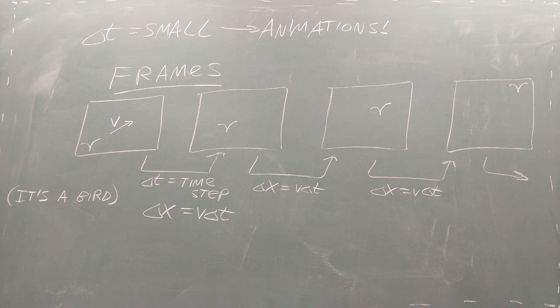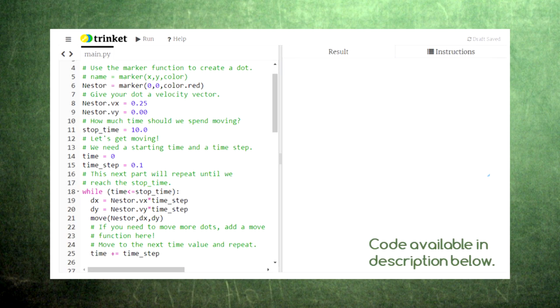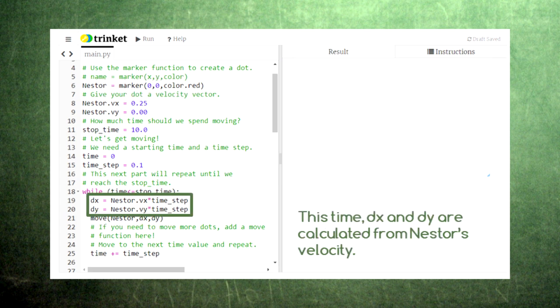We can tell our computer code to repeat this process by using a structure called a loop. Here we have a modified version of our code from Episode 6. We again have Nestor starting out at the origin and we'll use the move function to move him by an amount dx and dy in the horizontal and vertical directions.